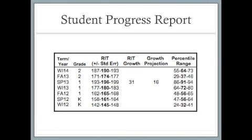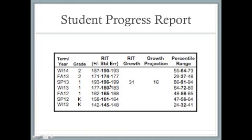If a school is measuring fall-to-spring growth, in the spring there will be populated numbers in this line. The growth projection is what 50% of the students who started at the same spot will have grown — 16 RIT. So for this first grader who started at 165 RIT, 50% of those students who start here will grow 16, resulting in a 181 RIT score. This student had a fantastic experience and grew far beyond that, with actual growth of 31 RIT, scoring them in the 196 RIT area. Notice what also happened to the student's percentile — they started the year at a 56th percentile and grew all the way to a 91st percentile by the end of the year.